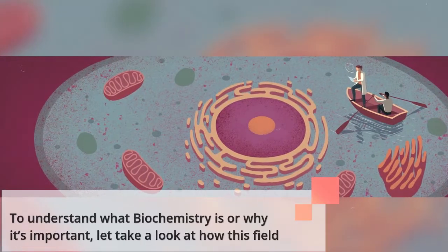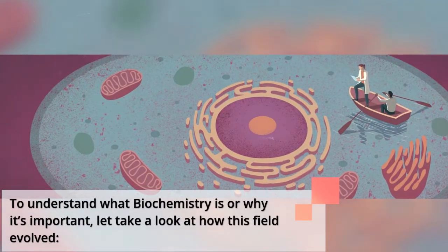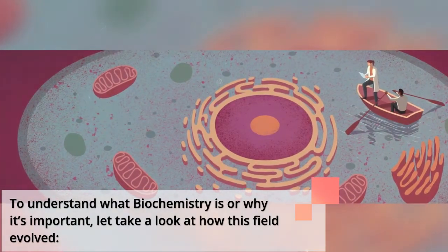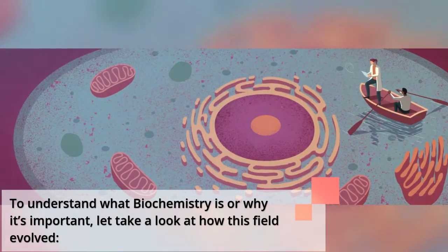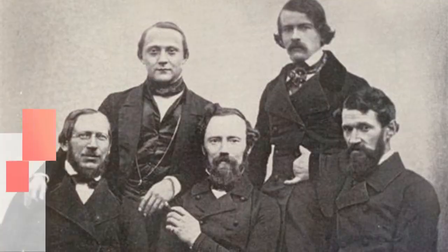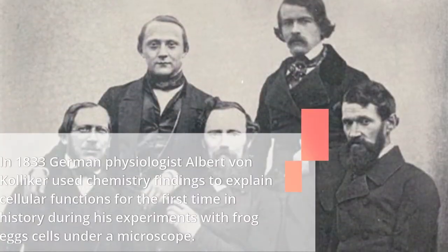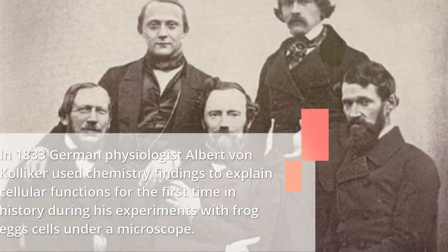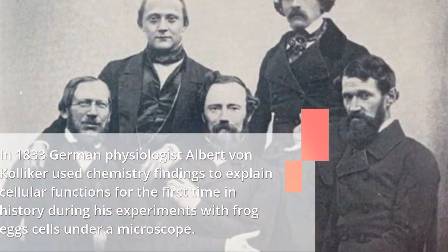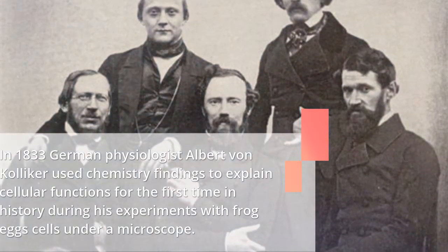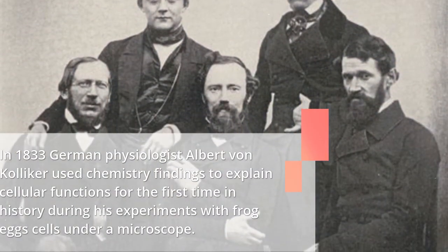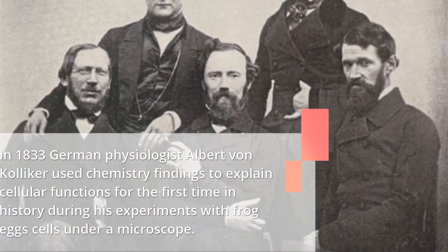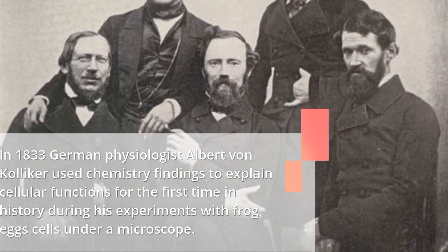To understand what biochemistry is or why it's important, let us take a look at how this field evolved. In 1833, German physiologist Albert von Kölliker used chemistry findings to explain cellular functions for the first time in history during his experiments with frog egg cells under a microscope.